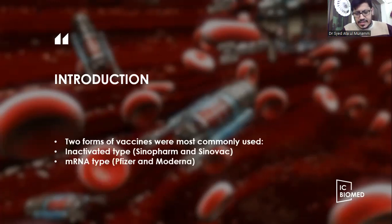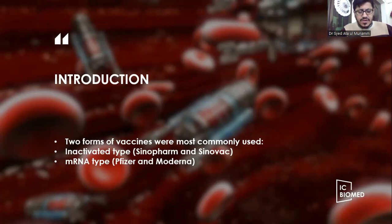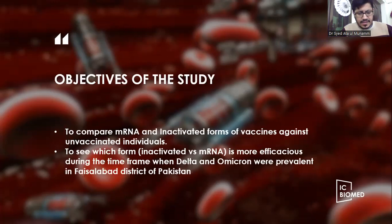Looking at the data, we see that mostly two forms of vaccines were most commonly used: the inactivated type of vaccine, which used an inactivated virus — specifically Sinopharm and Sinovac — and the mRNA type, which were Pfizer and Moderna, used to vaccinate the masses by the government of Pakistan.